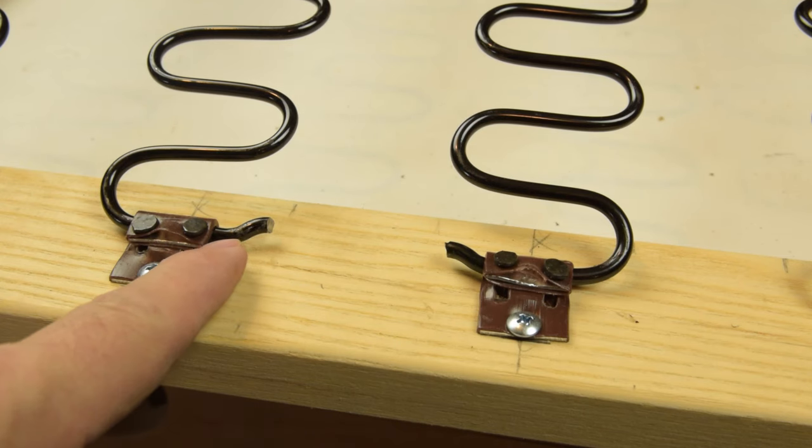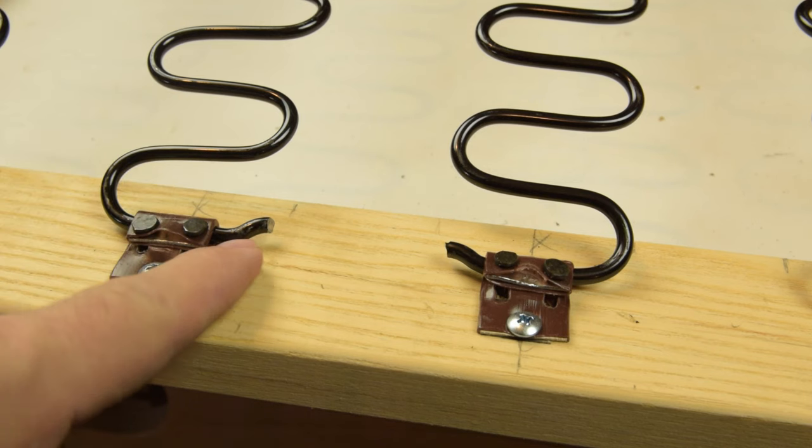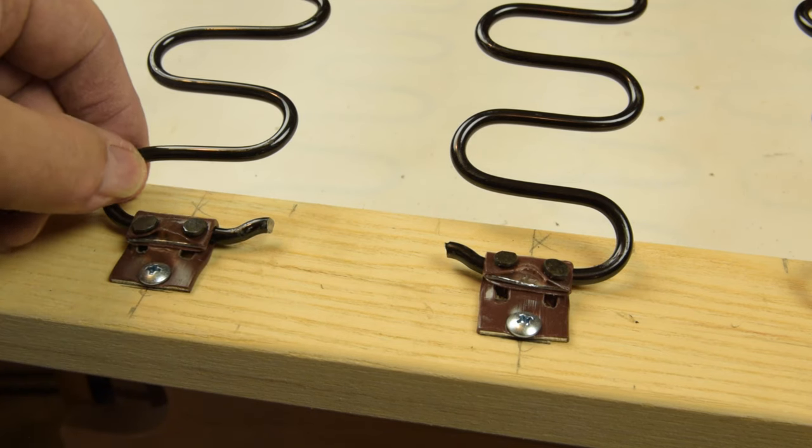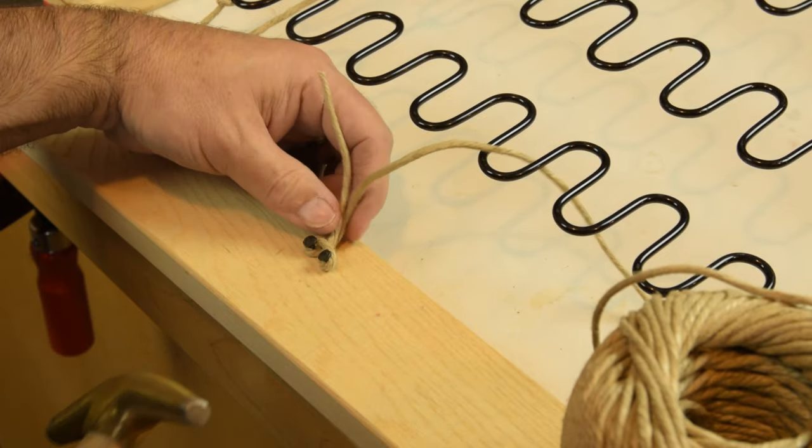The little hook on the end of the zigzag spring may seem trivial, but it's actually what prevents this spring from pulling out of the clip during regular use. Then just a little bit of ruby twine to tie off the springs.